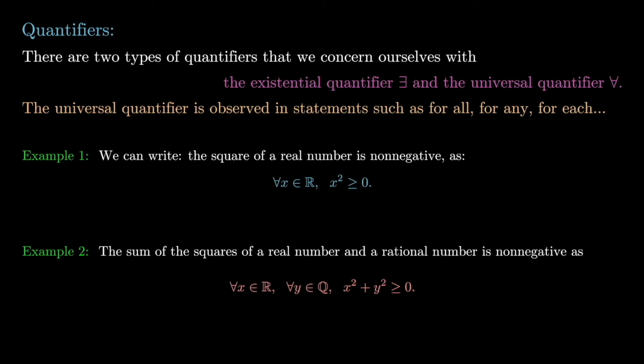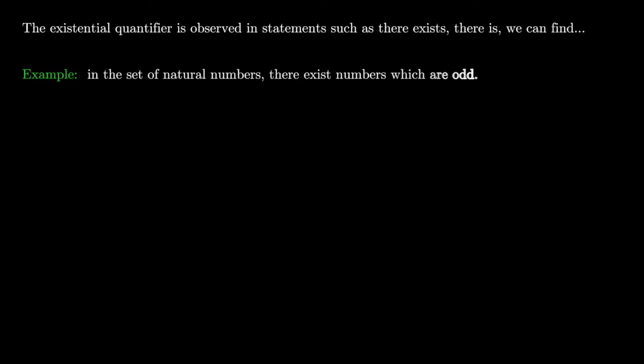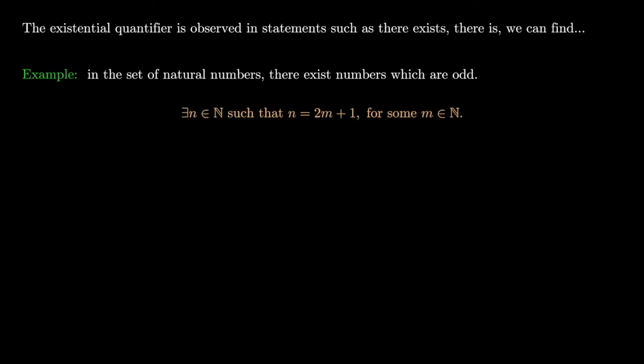The existential quantifier appears in statements such as 'there exists,' 'there is,' 'we can find,' and so on. For example, in the set of natural numbers there exist numbers which are odd. We can write this as: there exists n in ℕ such that n = 2m + 1 for some m in ℕ. Remember that an odd number is just an even number plus 1, and any even number is divisible by 2.